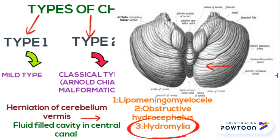Remember, syringomyelia is found in type 1 Chiari malformation, and hydromyelia is associated with type 2 Chiari malformation.